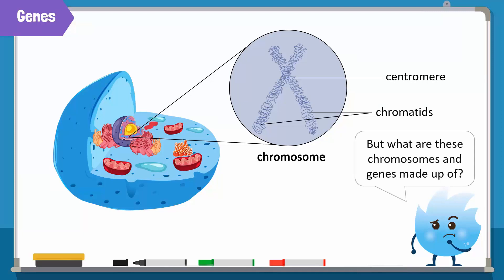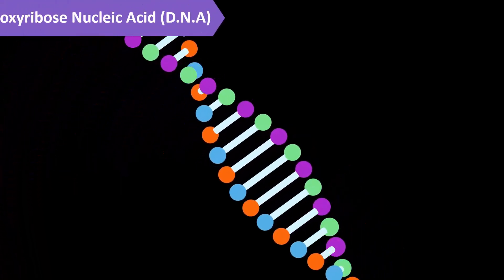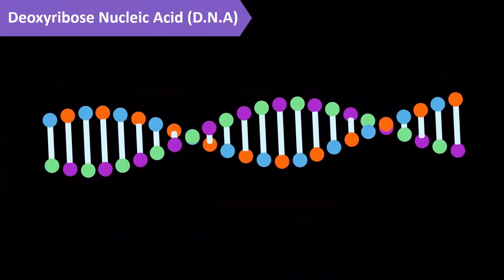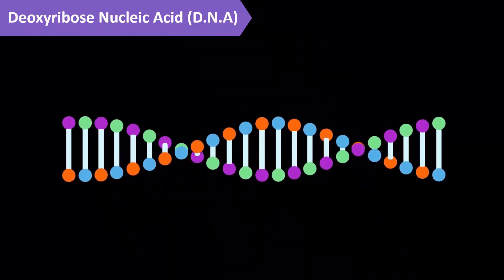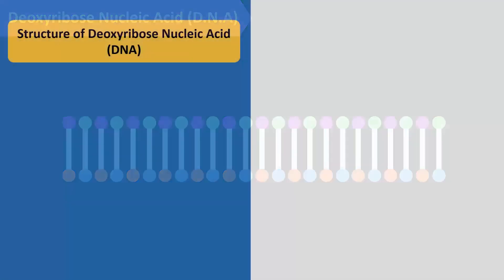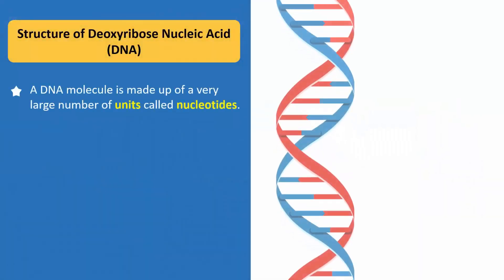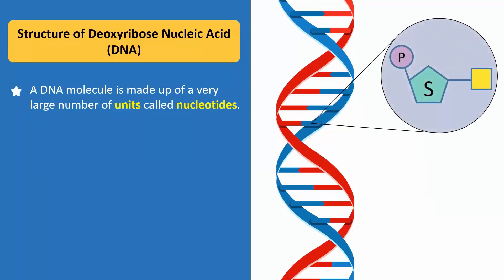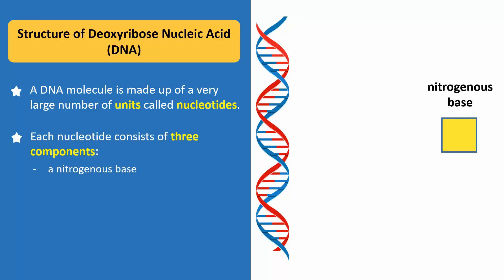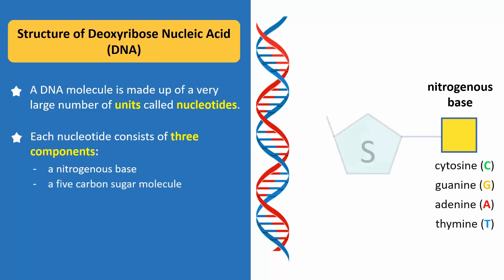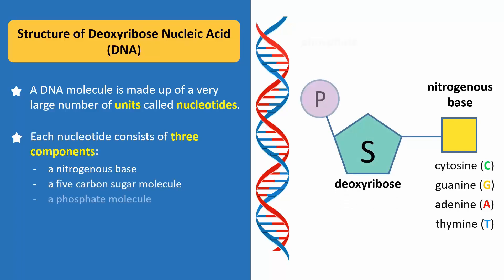But what are these chromosomes and genes made up of? Well, chromosomes and genes are made up of deoxyribose nucleic acid, or DNA. The DNA molecule is in the shape of a twisted ladder called a double helix. A single DNA molecule is made up of a very large number of units called nucleotides. Each nucleotide consists of three components: a nitrogenous base, like cytosine, guanine, adenine, or thymine; a five-carbon sugar molecule called deoxyribose; and a phosphate molecule.